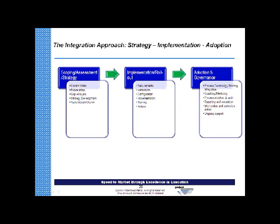In our experience, the implementations that go well are well supported on the left-hand side by a great strategy with a solid plan. And on the right-hand side — which is about 75% of the effort — the adoption and governance asks: if we're going to get better in project management and portfolio management, how are we going to integrate our process, technology, and people capabilities? What's the plan post-training for coaching and mentoring? What's the process adoption and audit? What governance are we going to put in place — auditing, checkpoints, reporting and escalation, intervention and corrective actions, and ongoing support?